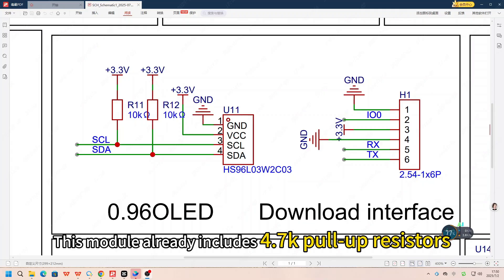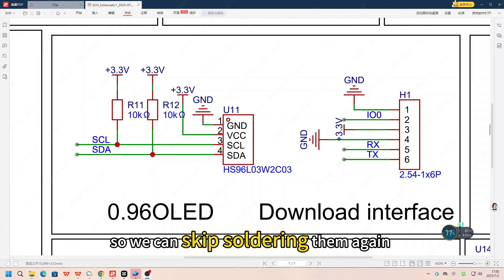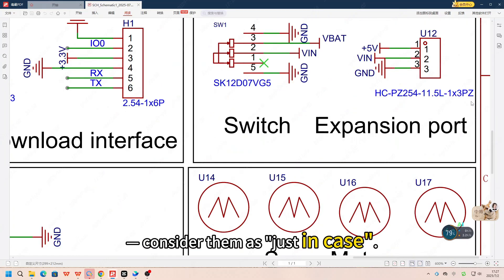This module already includes 4.7K pull-up resistors, so we can skip soldering them again, consider them as just in case.